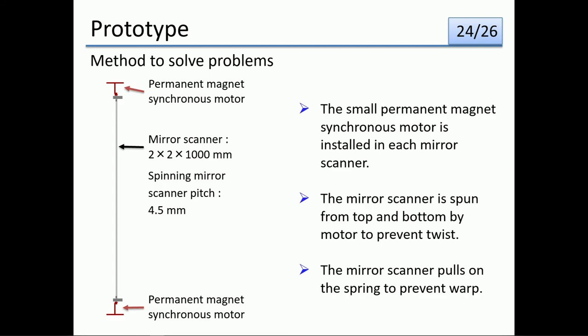We designed prototype types that consider methods to solve these problems. First, a motor is installed on each mirror scanner, and a permanent magnet synchronous motor is used as a small drive unit. Next, the mirror scanner is spun from both the top and bottom of the screen by motors so as not to twist. Therefore, motors are installed at the top and bottom of each mirror scanner. Finally, the mirror scanner is pulled by a spring to prevent warping.